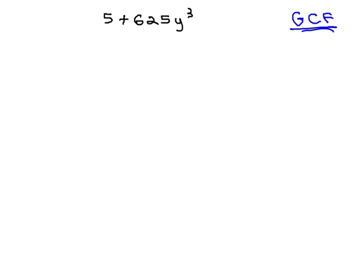Let's look at this expression and see what the GCF is. 5 and 625 both have 5 as a factor, and that leaves 1 plus 125y cubed.